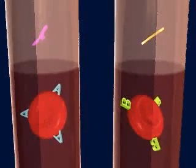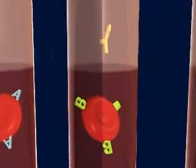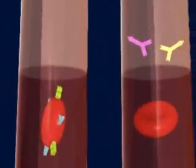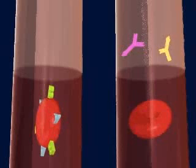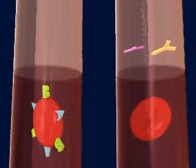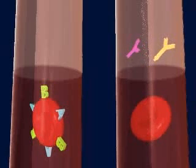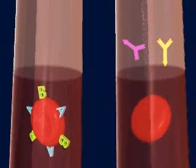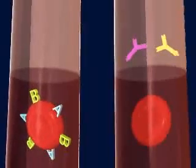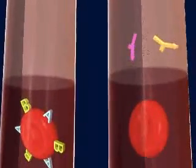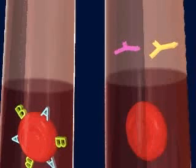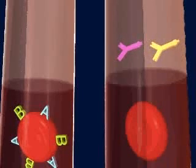Blood compatibility can be predicted by understanding the differences between the donor and recipient blood types. The donor's blood generally only contains red blood cells with no plasma. Therefore, it is agglutinins in the recipient's blood plasma that determine if the donor's blood will be compatible. For these reasons, type O is known as the universal donor, while type AB is known as the universal recipient.